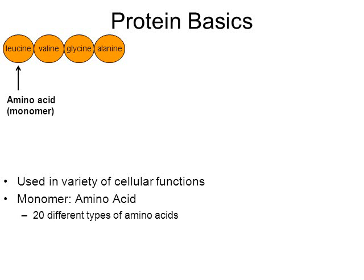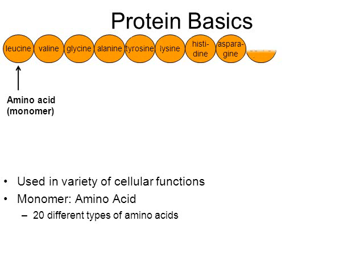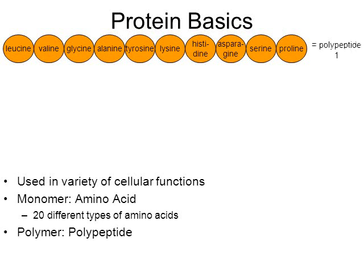There are 20 different kinds of amino acids. When a bunch of amino acids bond together into a big long chain, we call this a polypeptide. This big long chain of 10 amino acids makes up one single polypeptide. A polypeptide is a large organic molecule made from smaller amino acids.